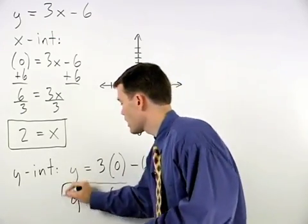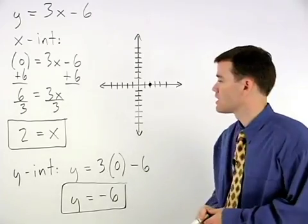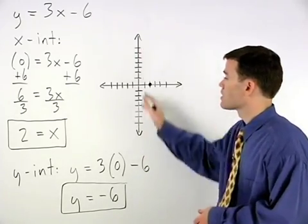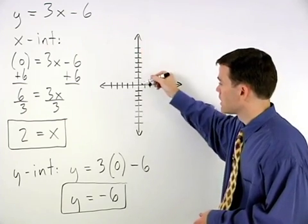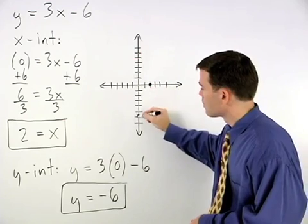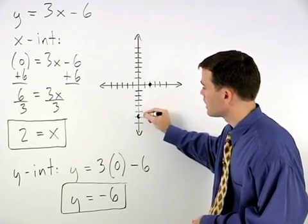So our y-intercept is negative 6, which means that our line crosses the y-axis down 6 units from the origin, or at the point 0, negative 6.